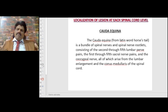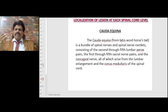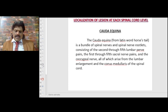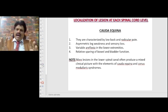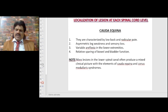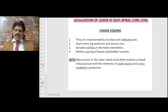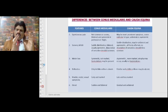The cauda equina — from the Latin 'horse tail' — is a bundle of spinal nerves and nerve rootlets consisting of L2 and below: the second to fifth lumbar nerve pairs, the first through fifth sacral nerve pairs, and the coccygeal nerve, all arising from the lumbar enlargement and conus medullaris. Cauda equina lesions are characterized by low back and radicular pain, asymmetric leg weakness, sensory loss, variable areflexia in the lower extremities, and relative sparing of bladder and bowel function.